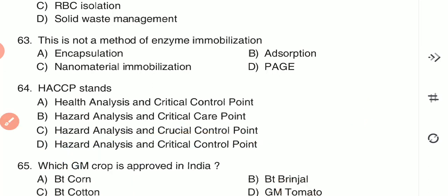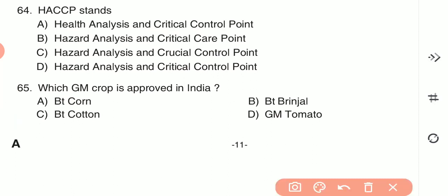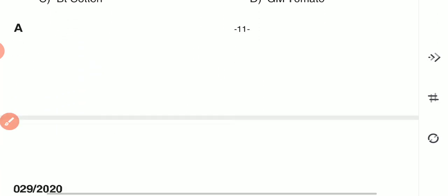Question 65: Which GM crop is approved in India? BT cotton is the genetically modified crop approved in India.